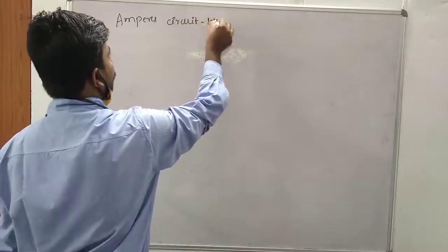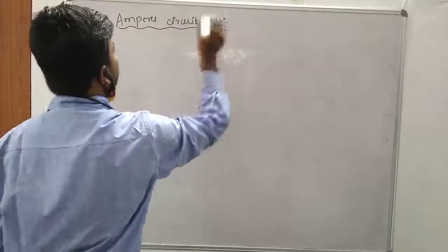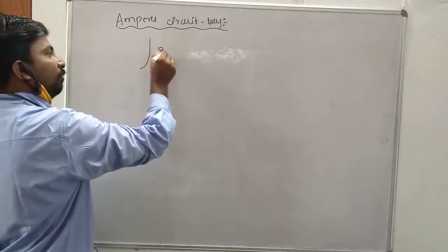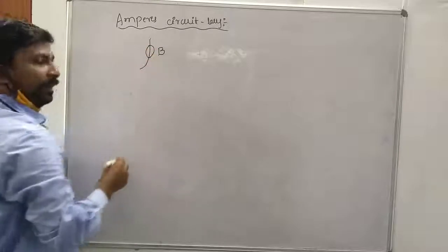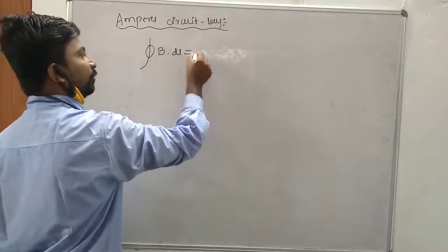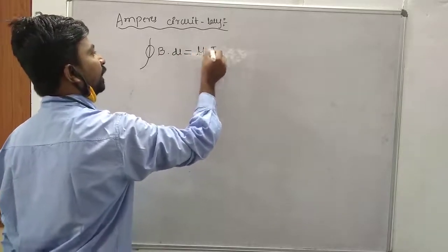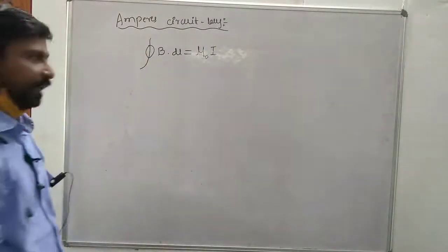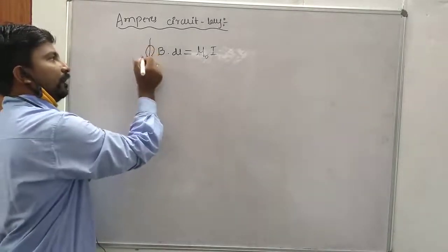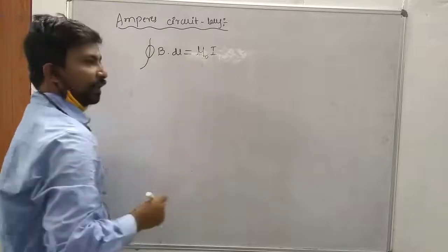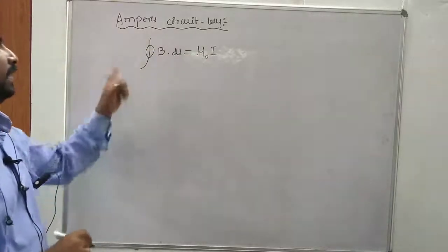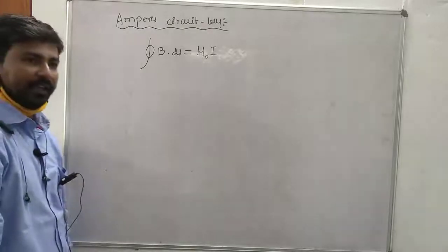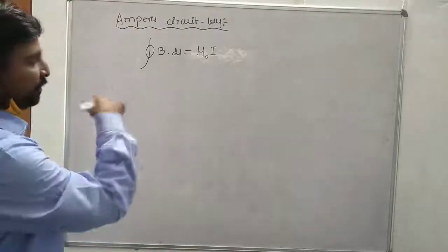First, Ampere's Circuit Law. The statement of Ampere's Circuit Law: the line integral of magnetic field around a closed loop is equal to mu naught times the net current passing through that loop. Where mu naught is the permeability of free space and i is the net current passing through that loop.